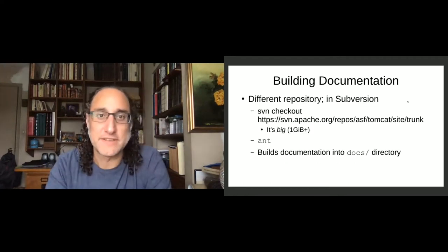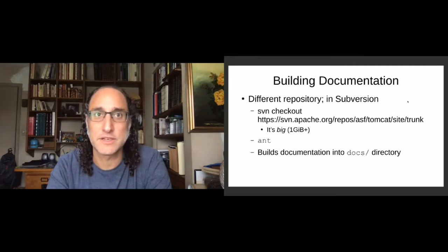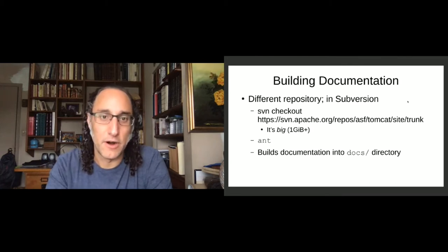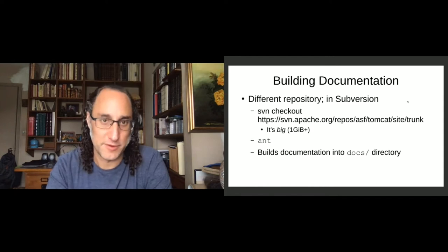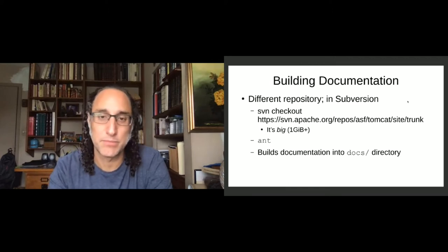The documentation is in a different repository — that's in Subversion. Be aware, this is big: it's more than a gigabyte of stuff, because it includes documentation for all versions of Tomcat, including all of the user guide documentation for all branches. Once you have waited for the download to finish, if you just run ant in that checked-out directory, it'll build all the documentation into the docs directory. That's actually pretty quick because most of it's pre-built.